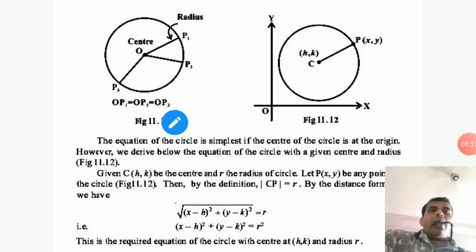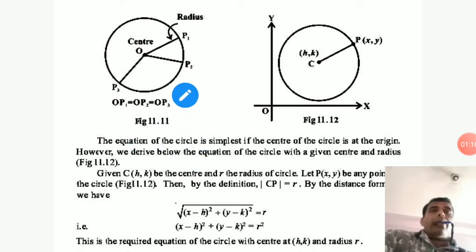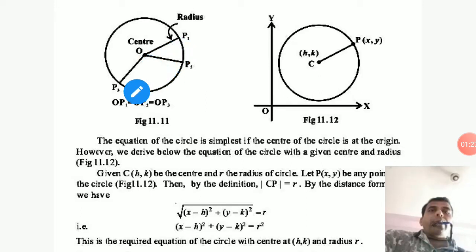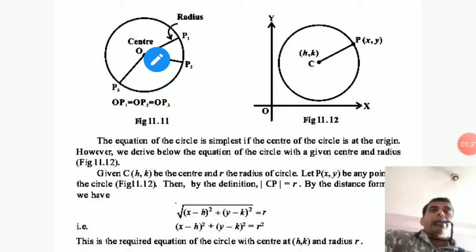Here I will explain how you can find the equation of the circle. For the equation of the circle, O is the center, and all the equal distances from the center to the circumference — OP1, OP2, OP3 — all these distances are equal, and this is called the radius of the circle.